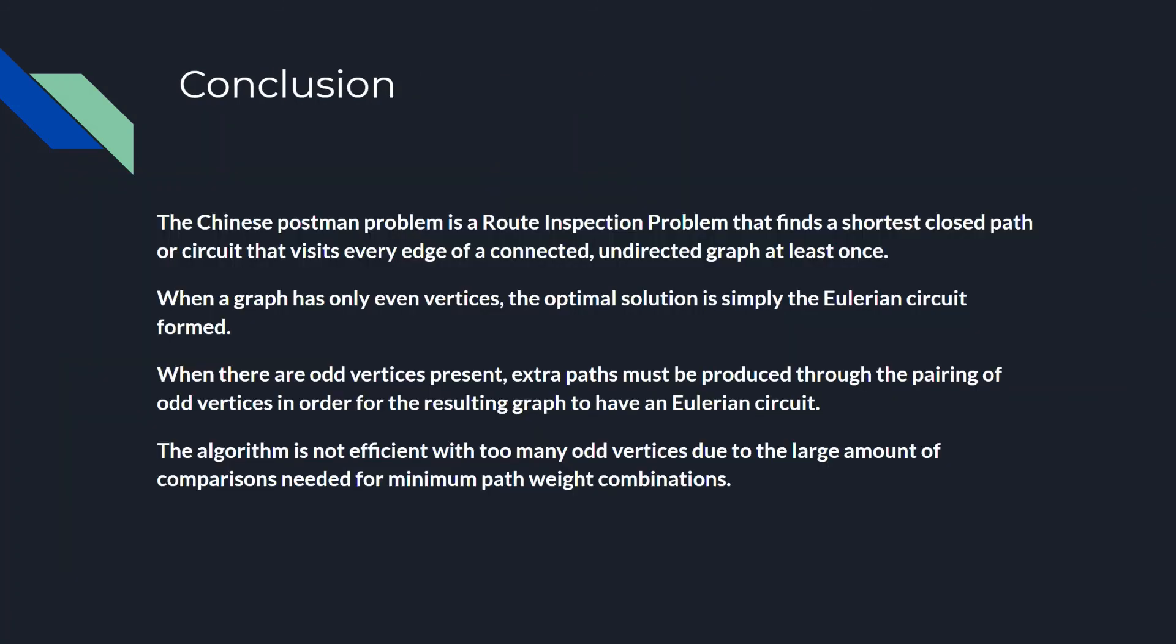Finally, the Chinese Postman problem is a route inspection problem that finds the shortest closed path or circuit that visits every edge of a connected, undirected graph at least once. When a graph has only even vertices, the optimal solution is simply the Eulerian circuit formed. When there are odd vertices present, extra paths must be produced through the pairing of odd vertices in order for the resulting graph to have an Eulerian circuit. The algorithm is not efficient with too many odd vertices, as I have explained before, due to the large amount of comparisons needed for minimum path weight combinations.